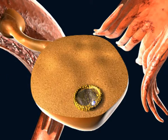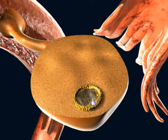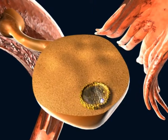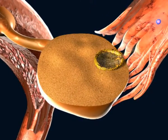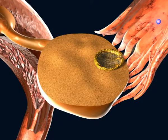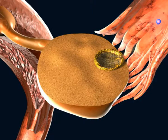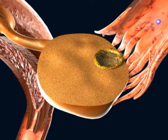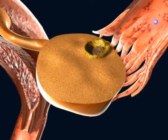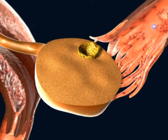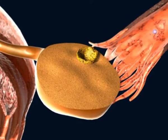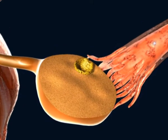Around day 12 to 14 of the cycle, the follicle has grown to the size of about 21 millimeters. The rupture of the follicle ensues, which is called ovulation, and the mature ovule is released. The fallopian tube's fimbriae move towards the ovary and catch the oocyte, which stays near the ampullary zone of the tube, waiting to be fertilized.